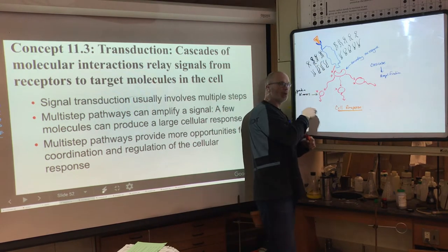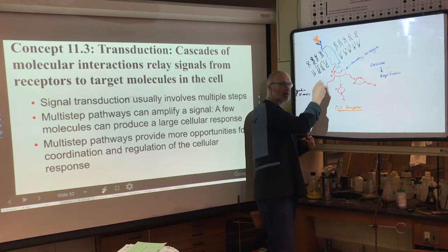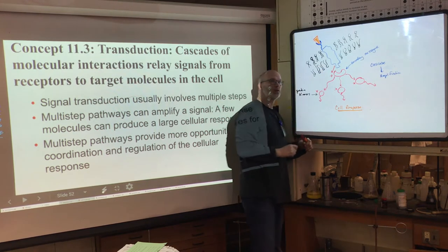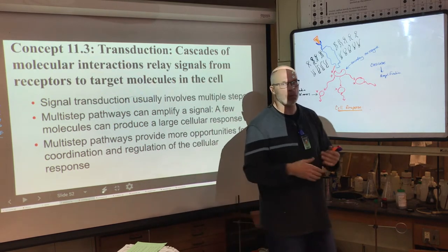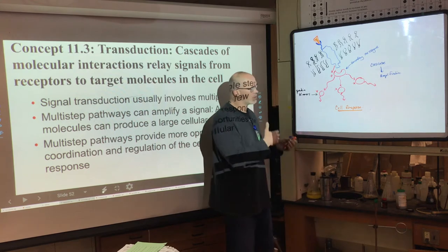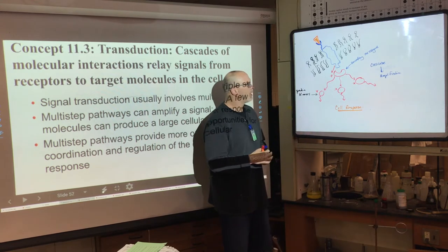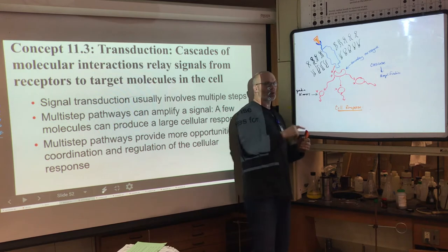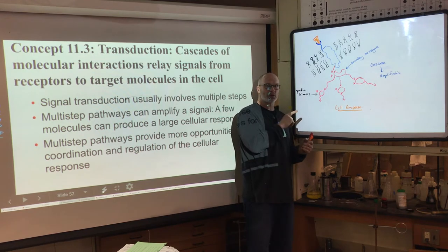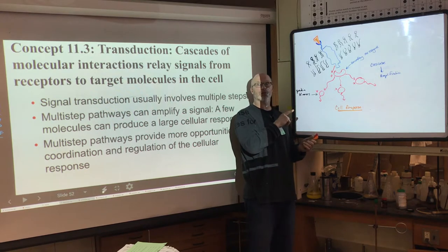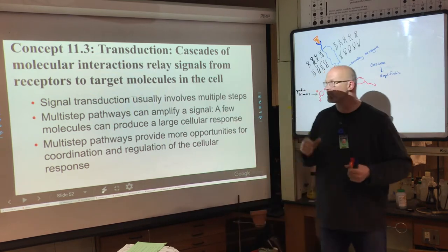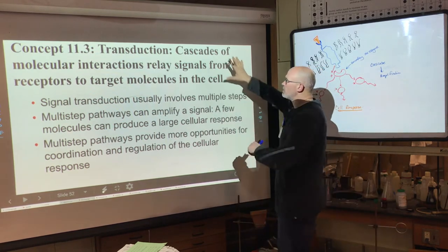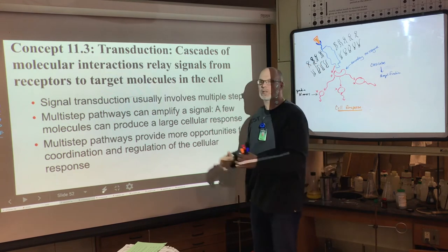That messenger RNA can make a protein, or other chemicals can be turned on to elicit another response. A growth factor could tell the cell cycle to get past the checkpoint and start mitosis. There are a whole bunch of possible cell responses depending on the cell's job. We'll also learn today that the response could tell the cell to commit suicide — something called cell apoptosis.